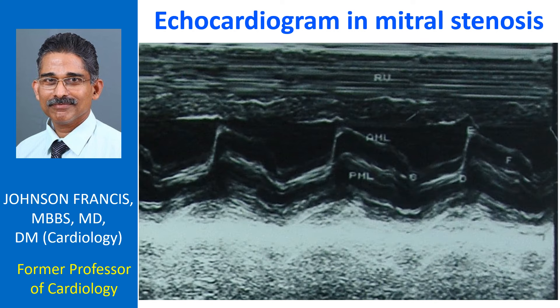M-mode echocardiogram showing the paradoxical anterior motion of the posterior mitral leaflet in diastole with reduced separation of the two leaflets. The anterior mitral leaflet has certain points marked on its movement: C, D, E, and F. EF slope is reduced in mitral stenosis.